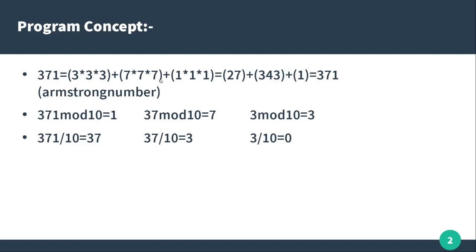We will build the Armstrong number by cubing each digit. So 1 cubed plus 7 cubed plus 3 cubed — add again and 251 will be... wait, the sum equals 371. So it will be an Armstrong number. We can make the basic concept: if you want to check the first number, the result matches the same program.